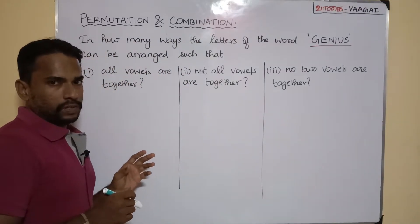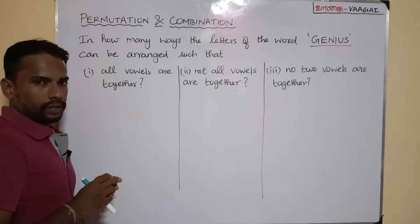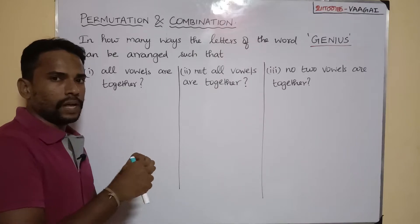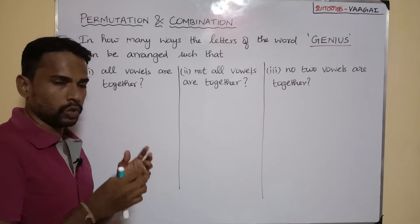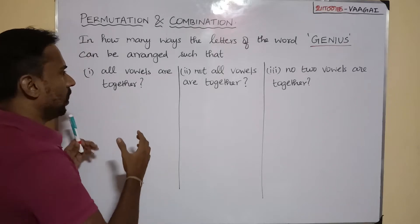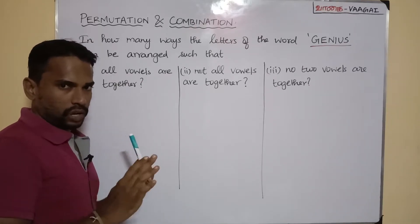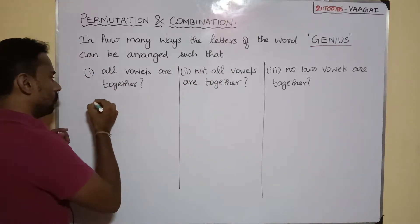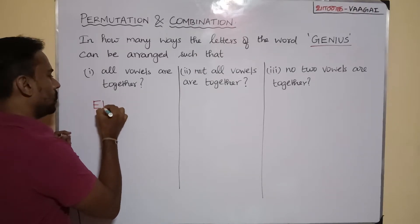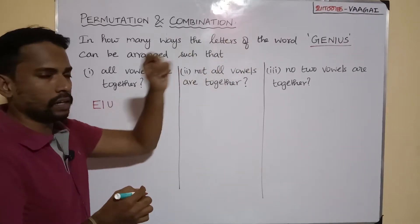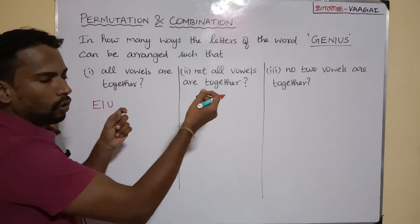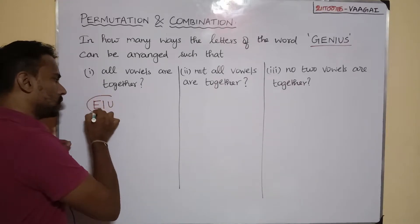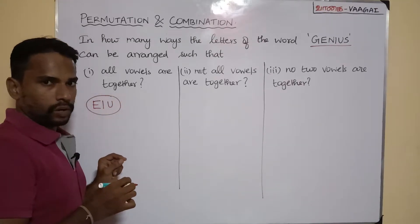The first subdivision is: all vowels are together. This means wherever the vowels appear, those three vowels should always appear together. To handle this, we group all the vowels together first. The vowels are E, I, and U — taken in the order they appear in the word. We treat this group as one single object.